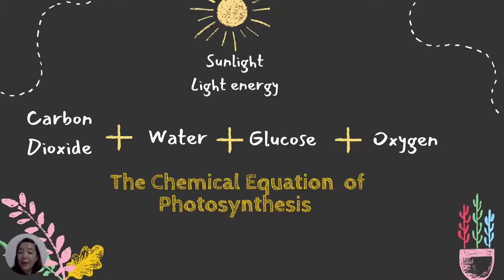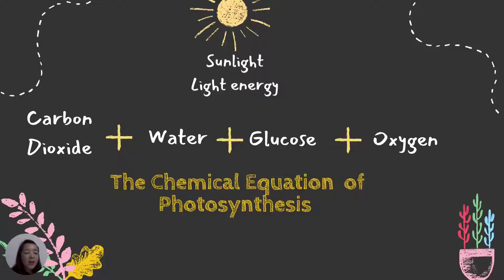This is the chemical equation of photosynthesis: CO2, carbon dioxide from the air, plus water, through the help of sunlight or light energy, produces glucose and oxygen as a waste product. Carbon dioxide plus water are the ingredients, and the products are glucose and oxygen.